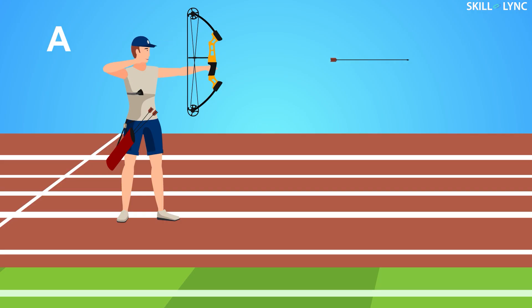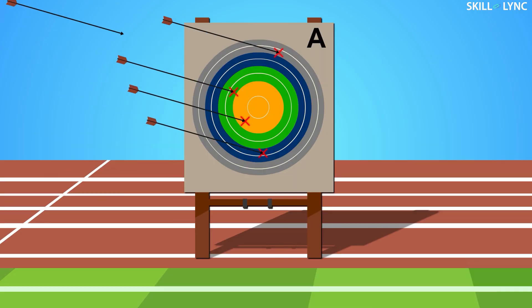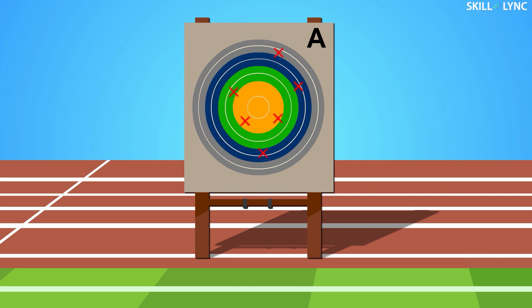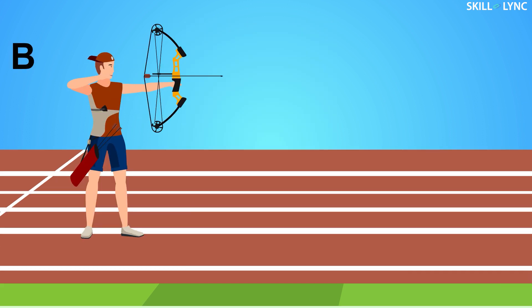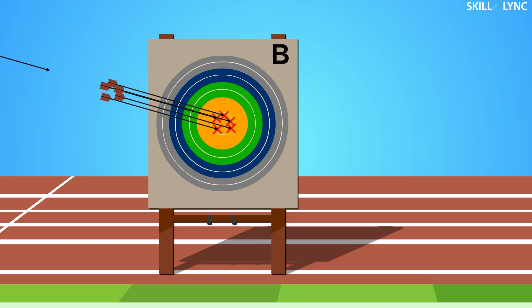First, it's person A's chance. He proceeds to shoot six arrows. But since A is an amateur, he tends to miss all six shots. Now it is B's chance. B is an expert marksman with many years of training and experience, so B manages to hit the bullseye with all six arrows.